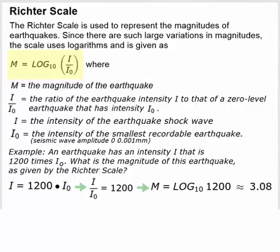So we can plug that ratio into our Richter scale formula, and we get that M equals the base 10 log of 1200, which is approximately 3.08 when we round to the hundredths.